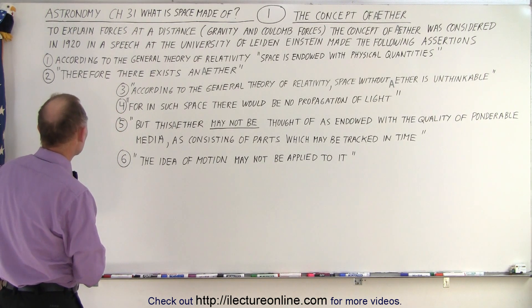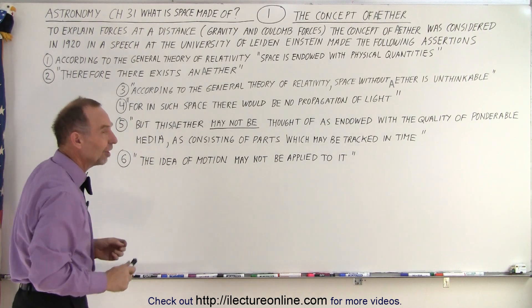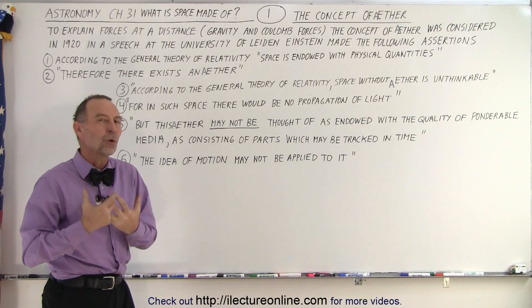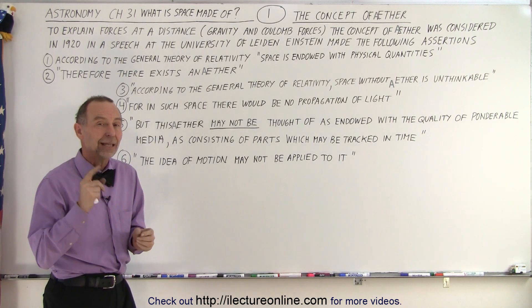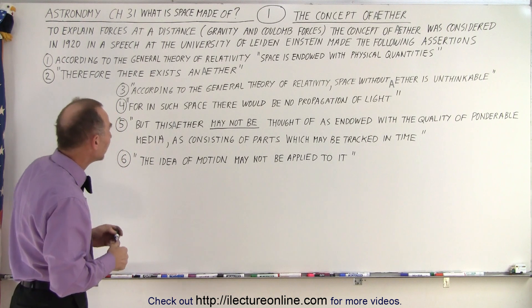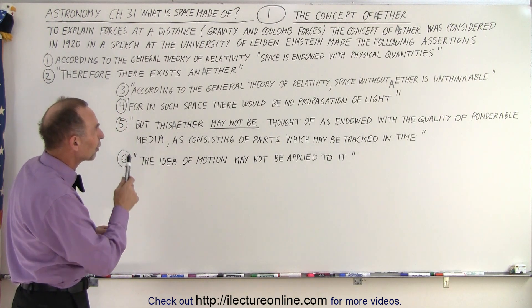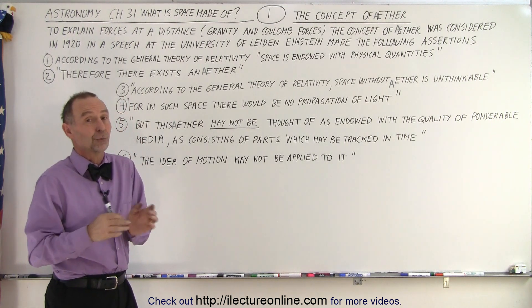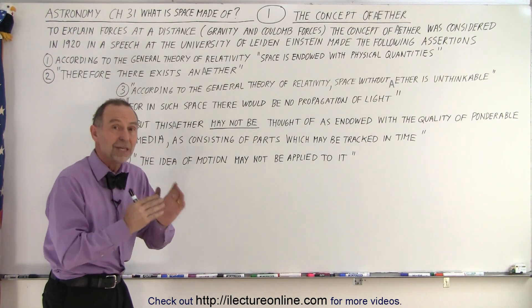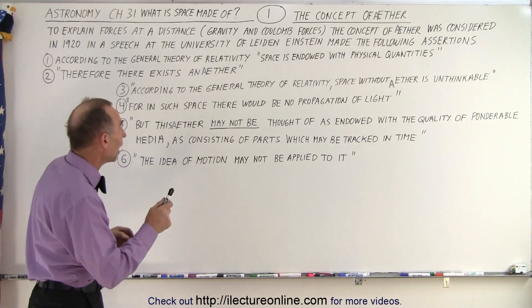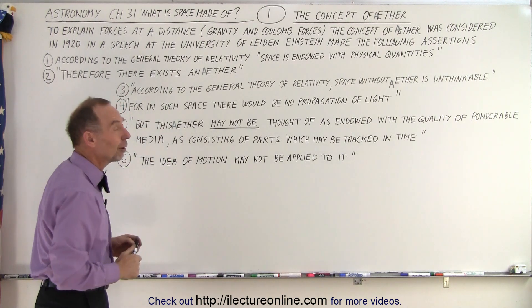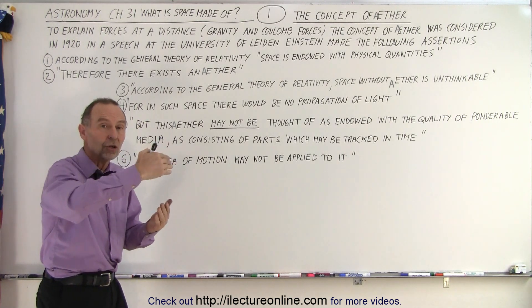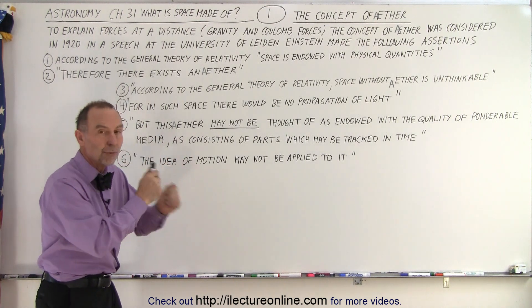Then he made the statement: therefore there exists an ether. He says an ether must exist because space has physical quantities, physical properties — and therefore there must be an ether. Then he goes on to say: according to the general theory of relativity, space without ether is unthinkable. He doesn't leave a lot of room for doubt. He says there must be an ether; it cannot be any other way. Because the general theory of relativity showed that light changes direction under the influence of gravity — so therefore there must be an ether.